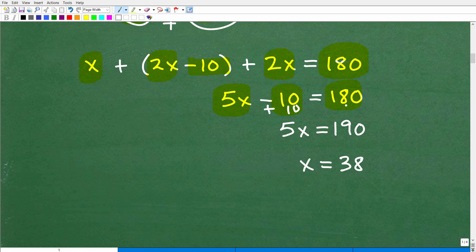So when I do this, I get 5x is equal to 180 plus 10 or 190. So to solve for x, what do I do? Well, you've got to divide both sides of the equation by 5. So 190 divided by 5 is 38. So x is equal to 38.